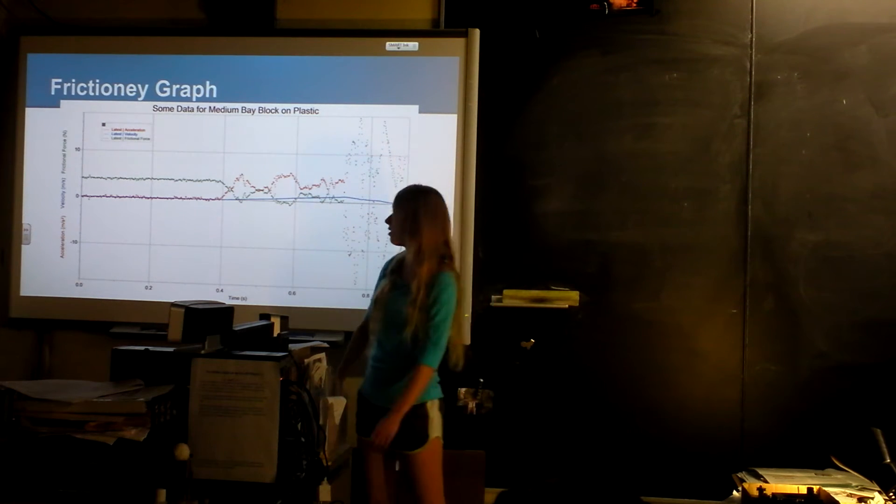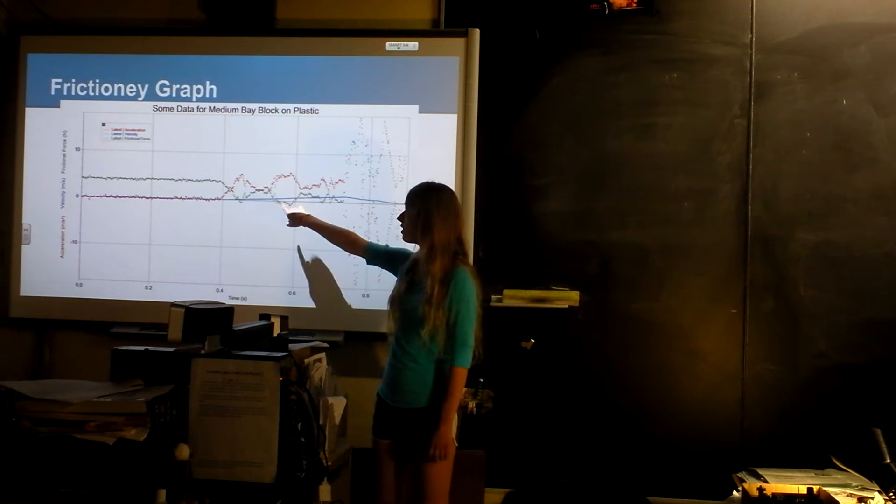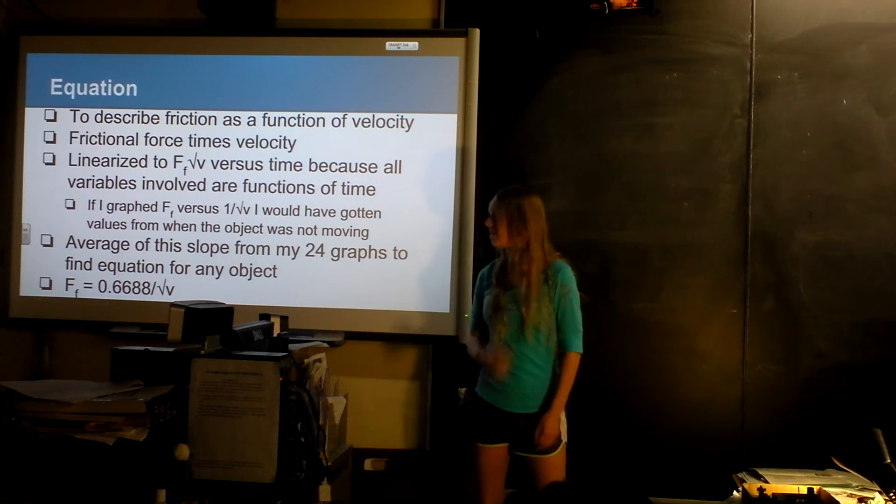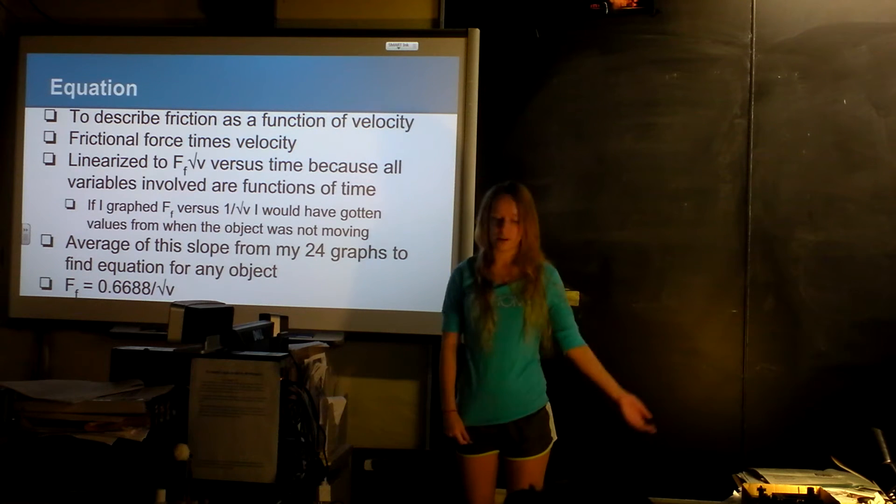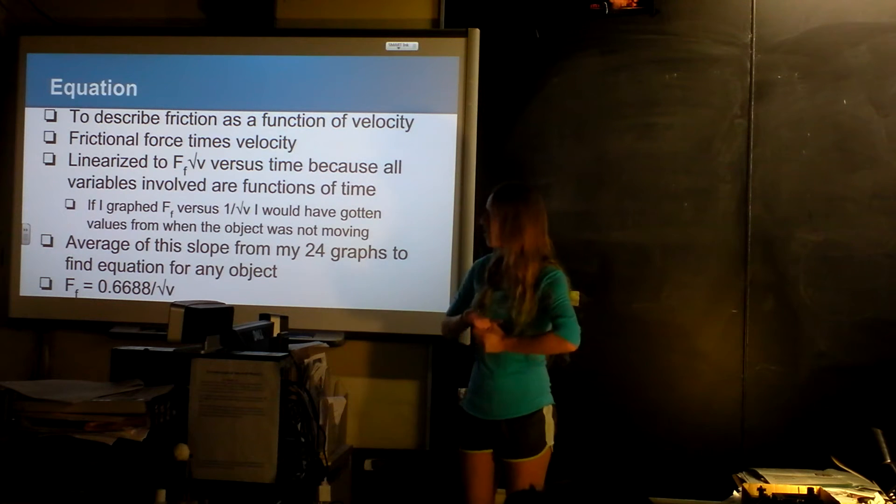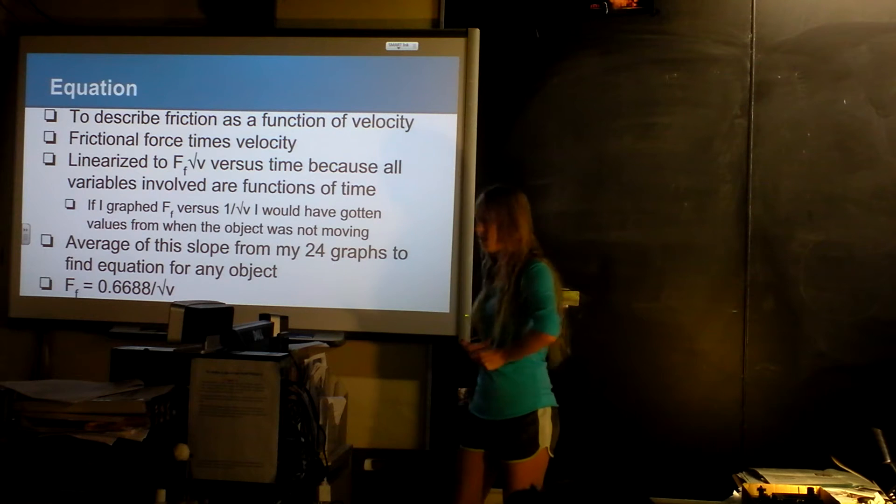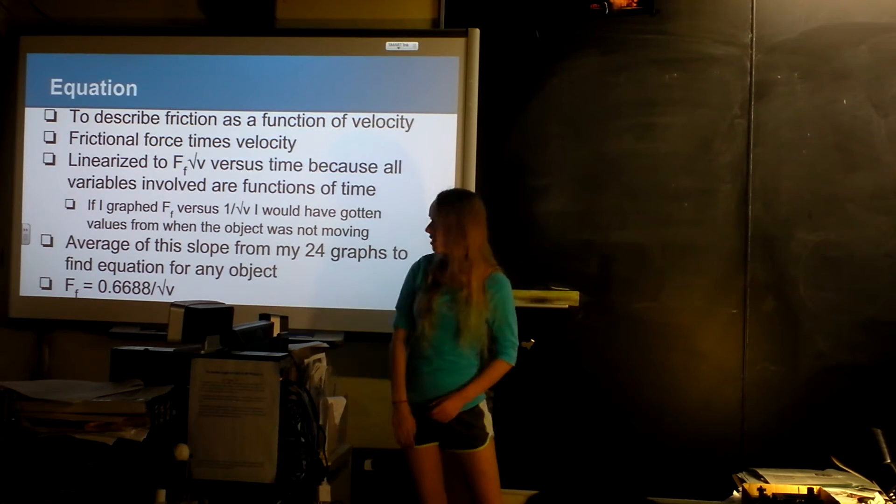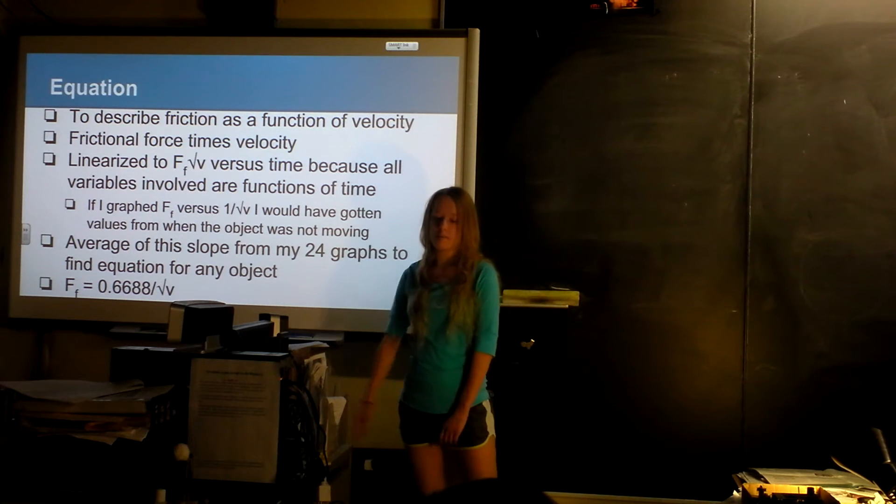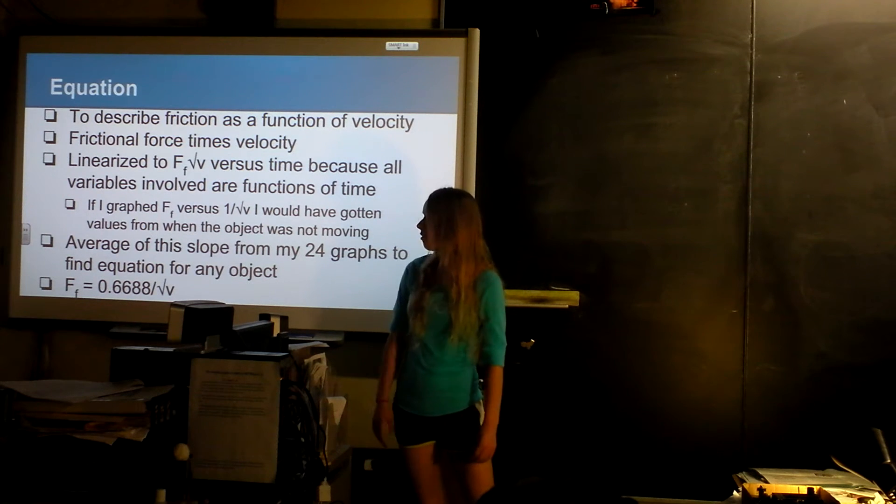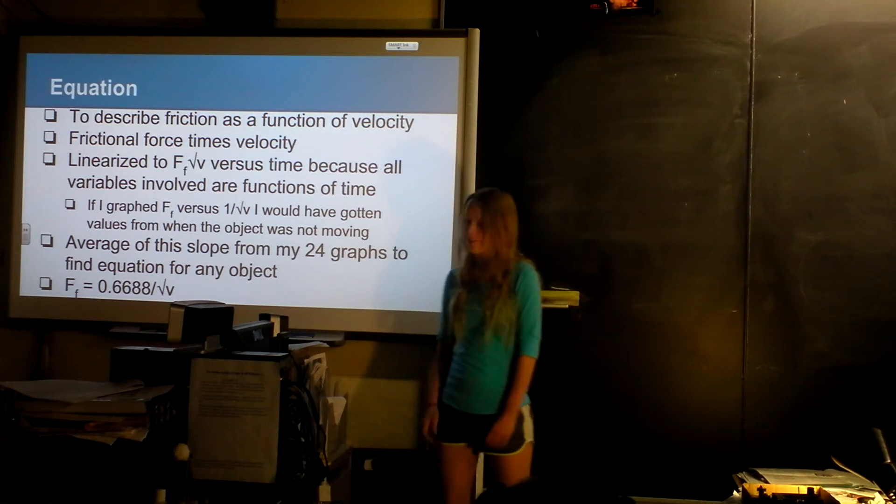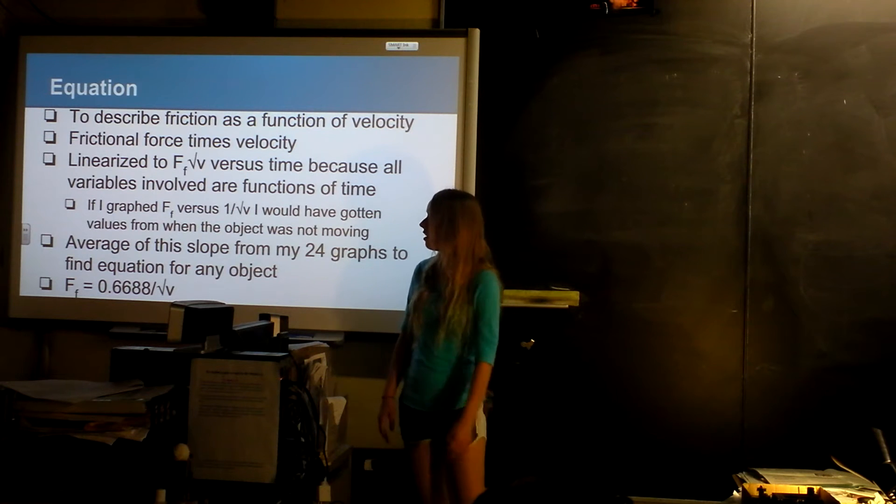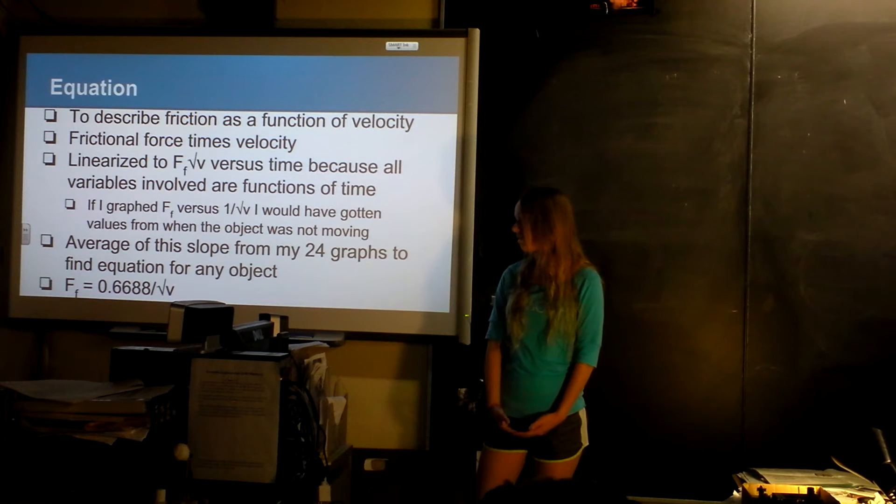Again, everything has the sine wave in it, which is really annoying. So I just had to imagine it was kind of in the middle, because that's where it should be if the mass was just straight down. I wanted to make an equation dependent on velocity, so I tried graphing things to see if they were linear. I tried graphing frictional force times velocity because I thought it was an inverse relationship. I kept them both over time because everything was a function of time. Then I found that it wasn't inversely proportional to velocity, but more inversely proportional to the square root of velocity.